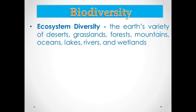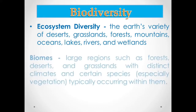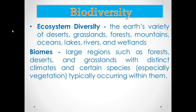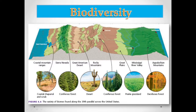Ecosystem diversity refers to the Earth's variety of deserts, grasslands, forests, mountains, oceans, lakes, rivers, and wetlands. Biologists classify terrestrial ecosystems into biomes — large regions such as forests, deserts, and grasslands with distinct climates and certain species. Different major biomes include coastal chaparral and scrub, coniferous forest, desert, grassland, and deciduous forests, found in places such as the United States.